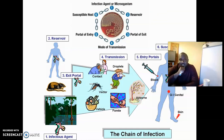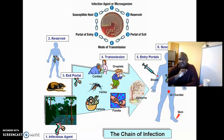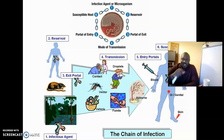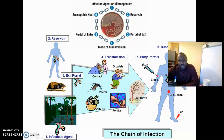You need an infectious agent, you need a reservoir, there has to be a portal of exit, a mode of transmission, a portal of entry, and that portal of entry leads to a susceptible host. The whole infection begins all over again, creating a cycle we understand as the chain of infection. Some of these components we have already described when looking at sources of microbes and how microbes interact with the human host.